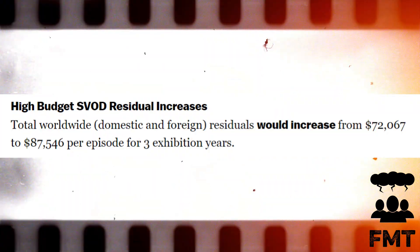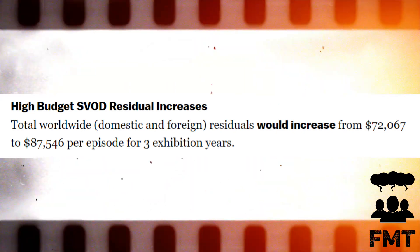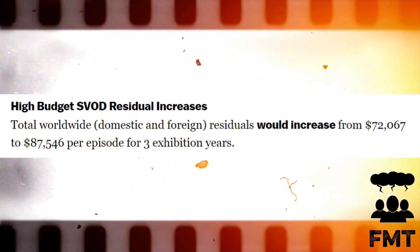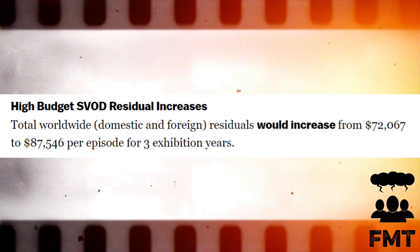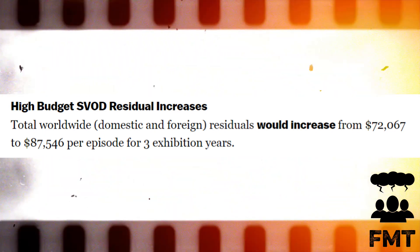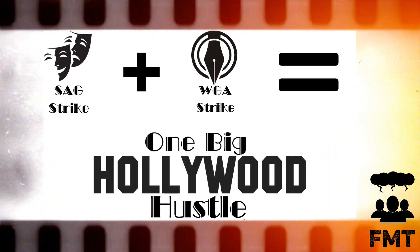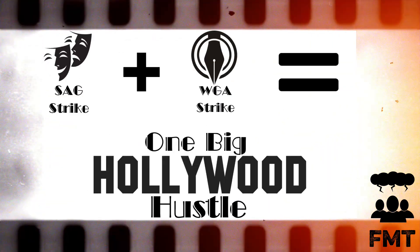Okay, what do they say about the residuals? Total worldwide domestic and foreign residuals would increase from $72,000 to $87,000 per episode for three years. Oh, a $15,000 increase. So that can't be it. But why haven't they jumped on this? Where are my people at? I need y'all to help me understand. Remember, y'all called me ignorant to the situation when I told y'all that guilds, aka unions, are nothing but hustles.